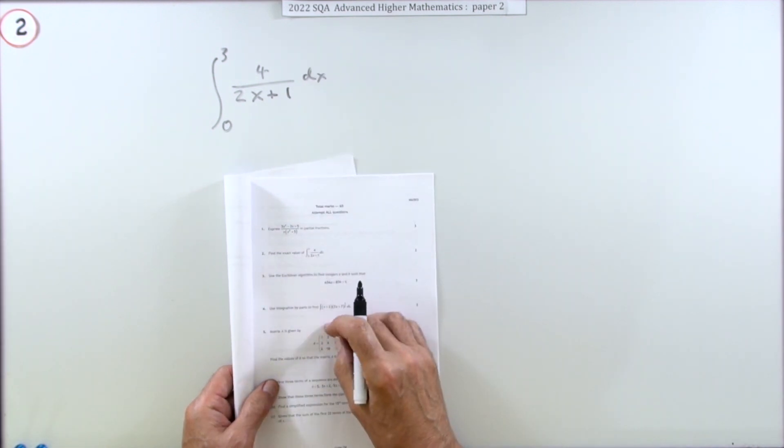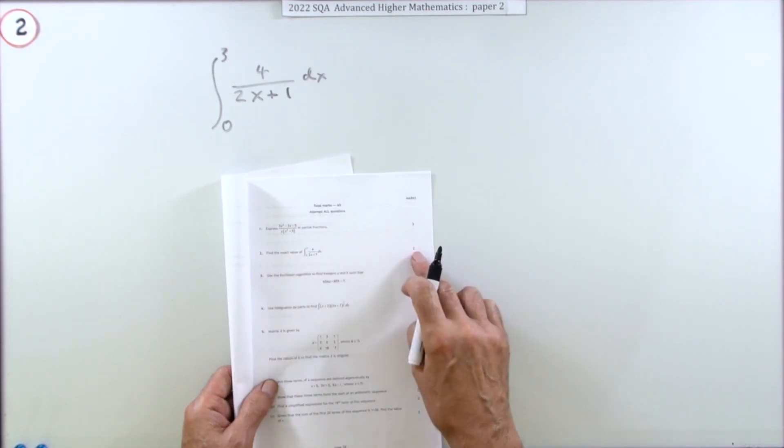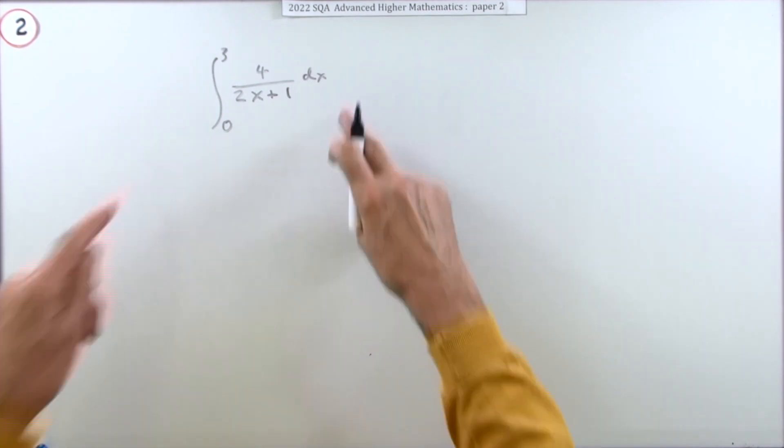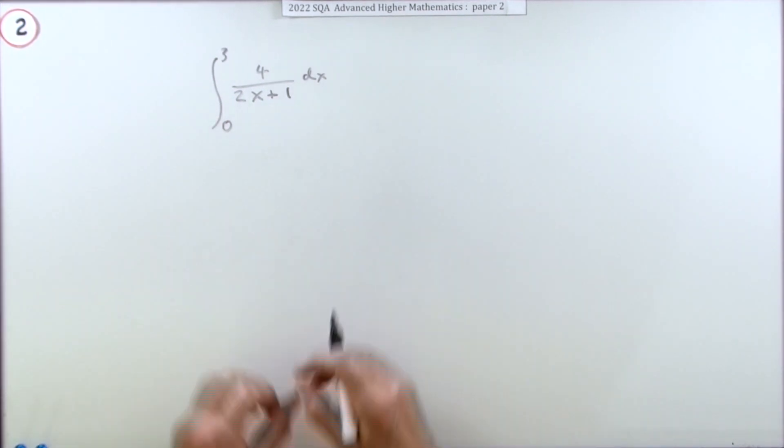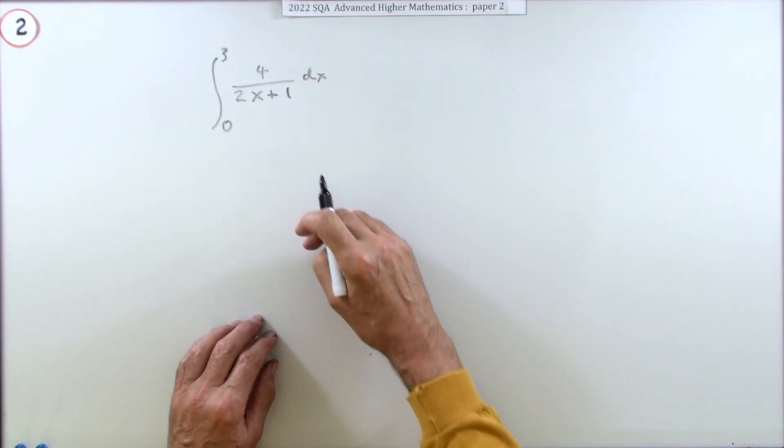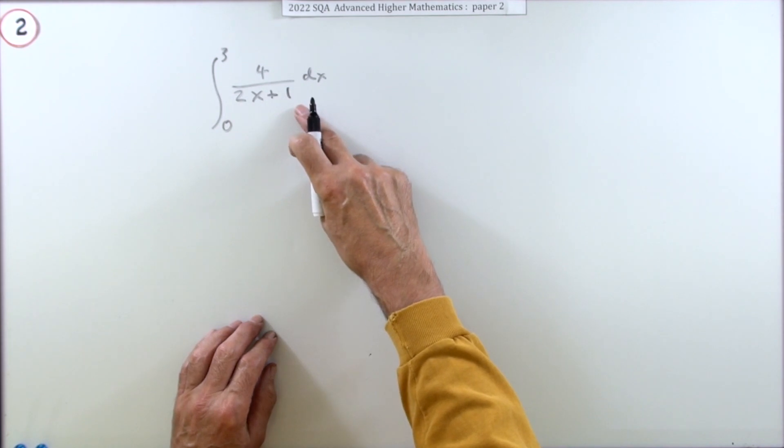Question 2 from the 2022 Advanced Higher paper 2, just a two mark question. Find the exact value of this integral. Well, I'm not exactly sure what that's doing there - that's quite a simple little integral - unless they just needed the marks, they need another two marks to make up the total.